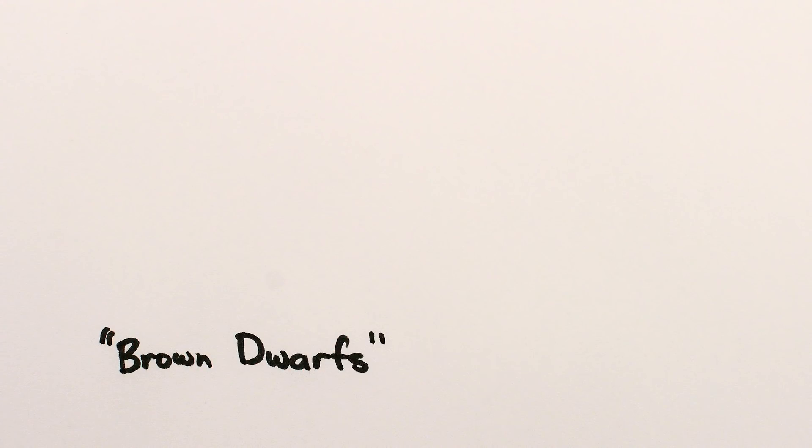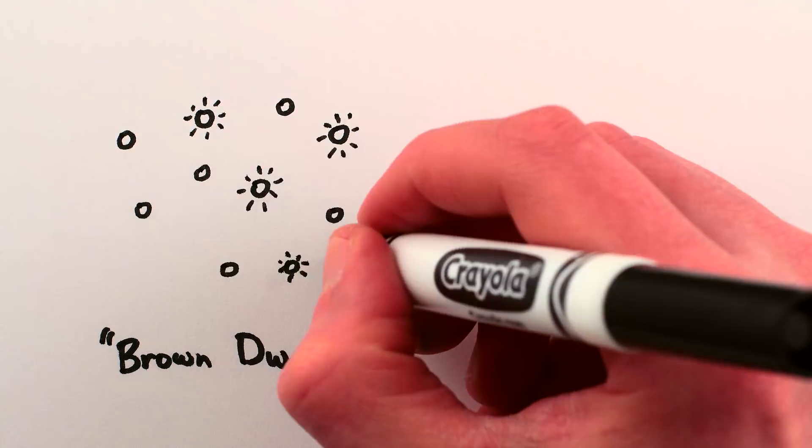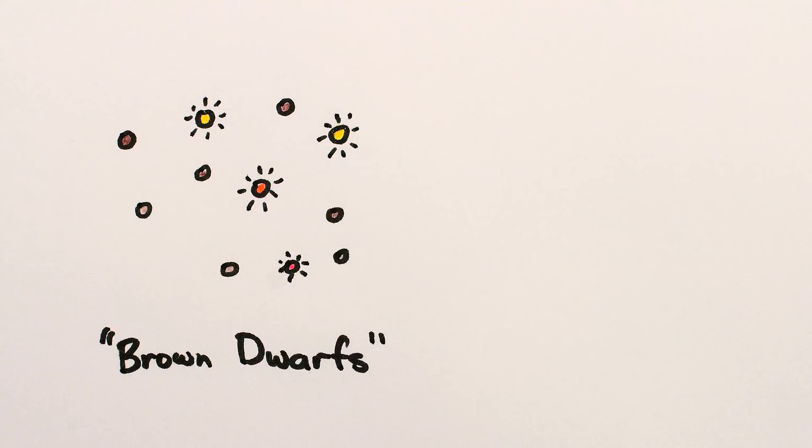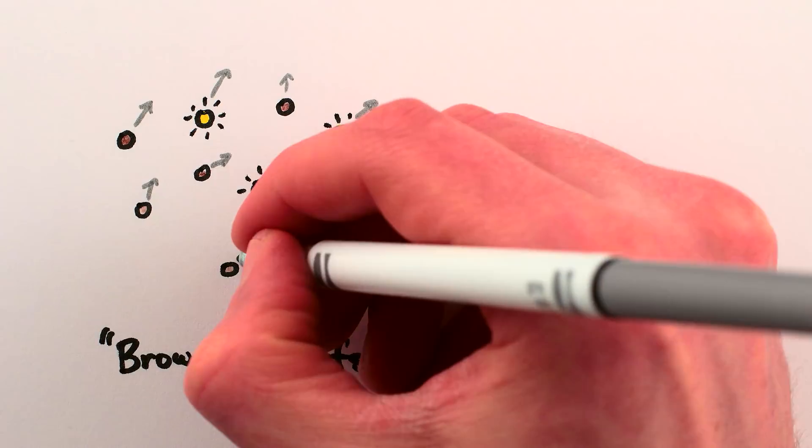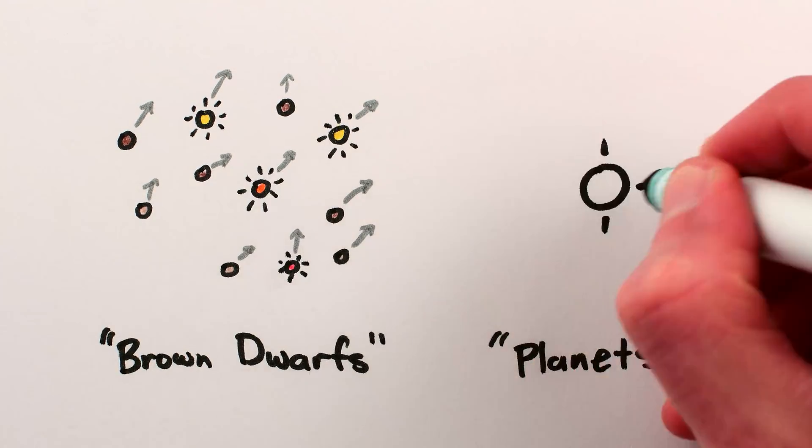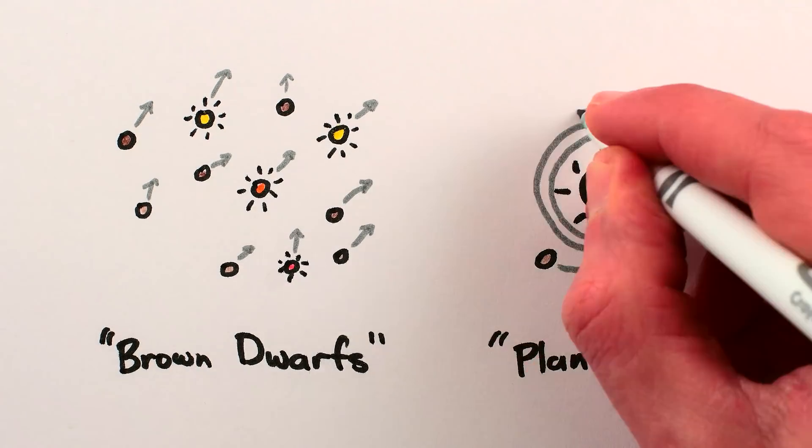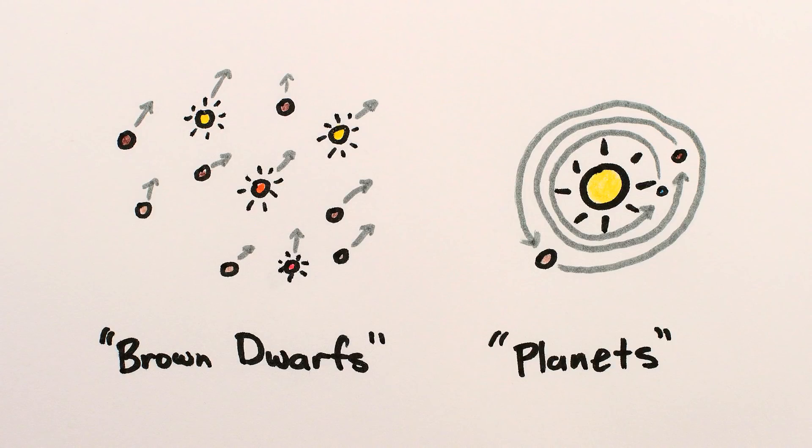1. Brown dwarfs, whether above or below the deuterium limit, and stars, appear to be located and move in similar ways, in loose clusters with other similar objects moving with roughly the same relative speeds. Planets, on the other hand, move around stars, or brown dwarfs, in orbits, and are much closer to the nearest star.